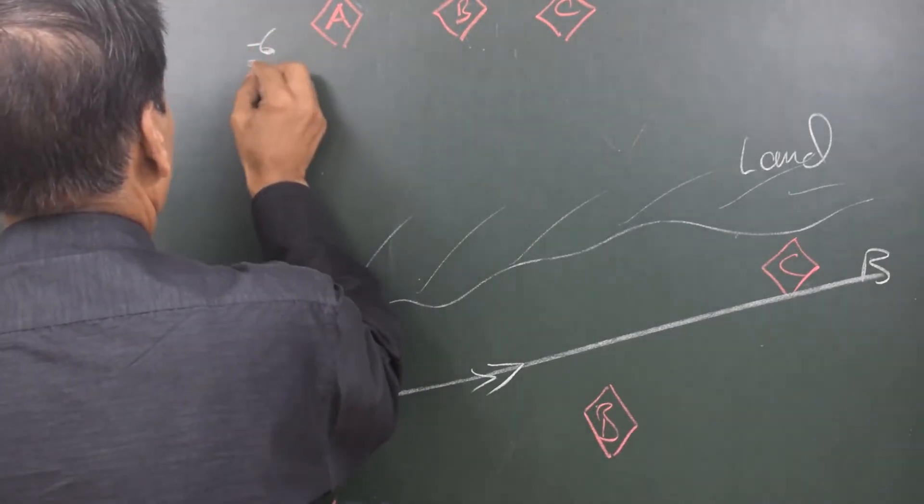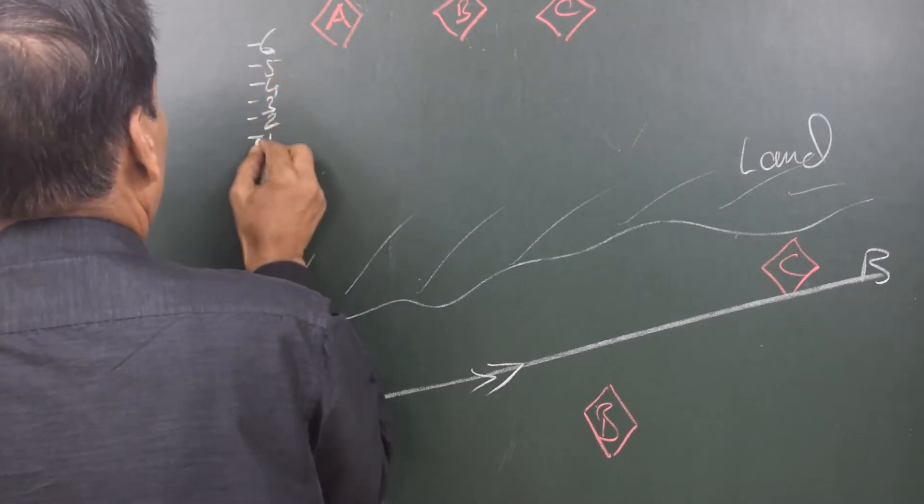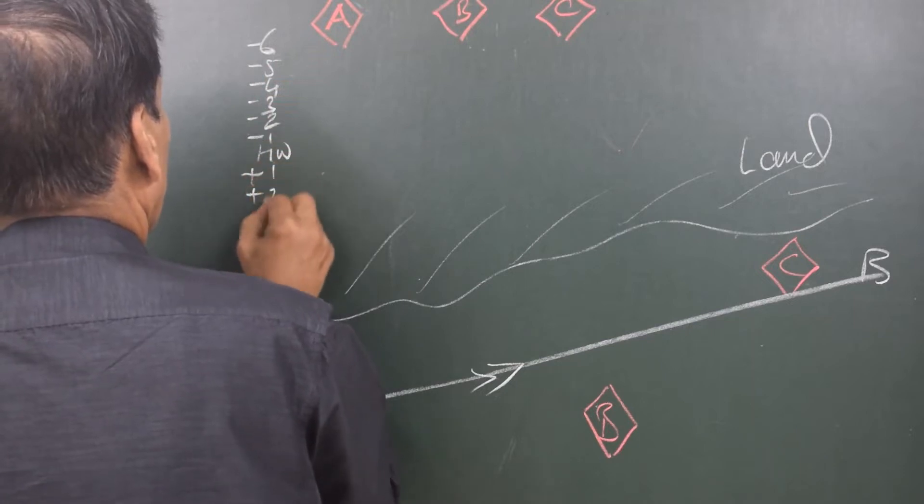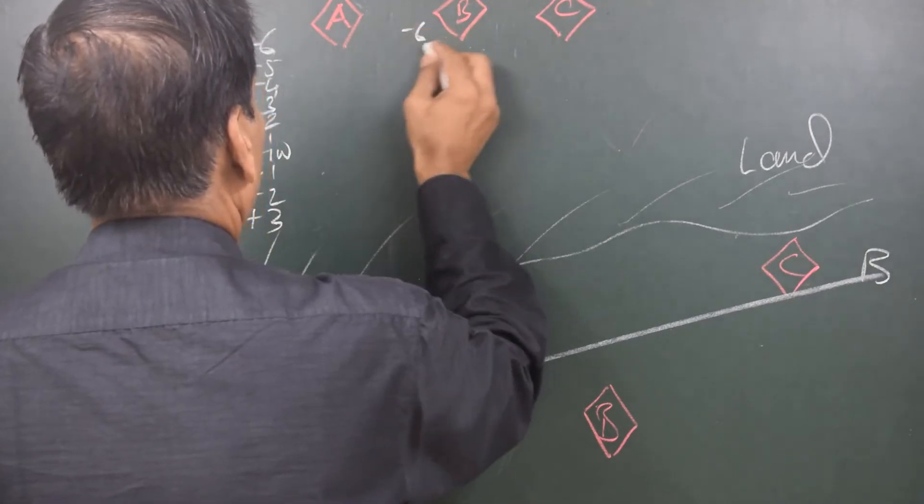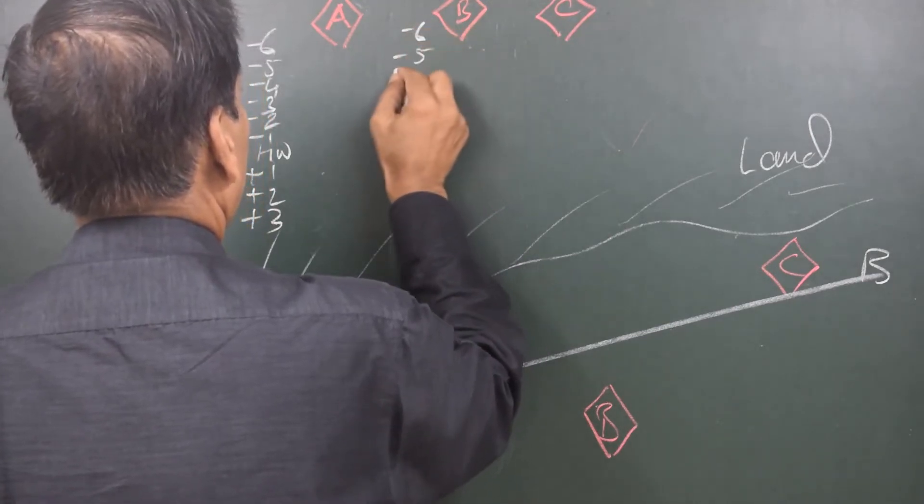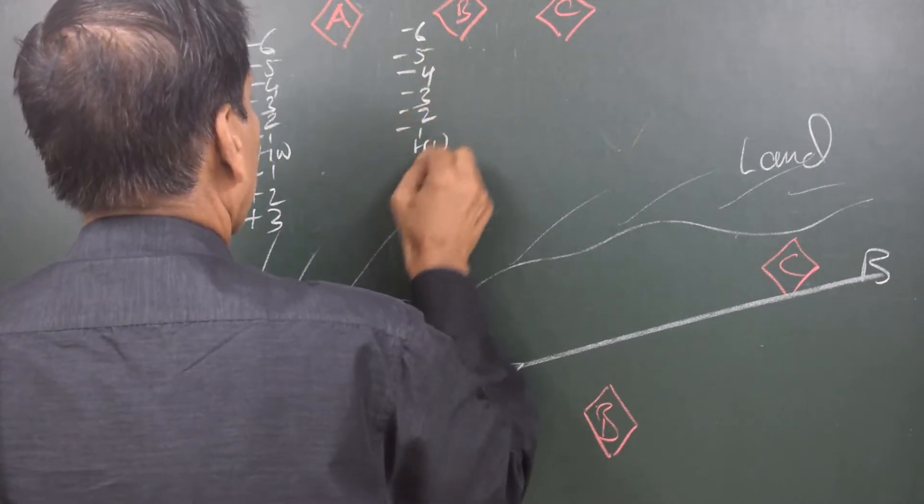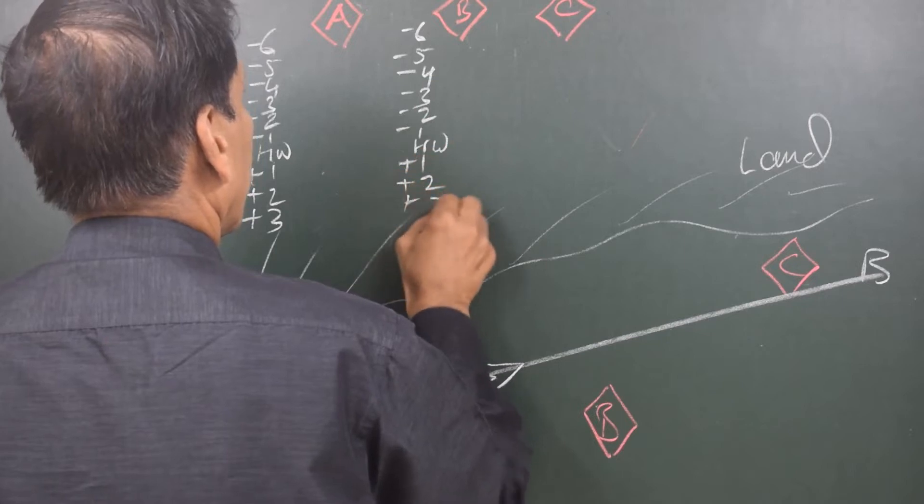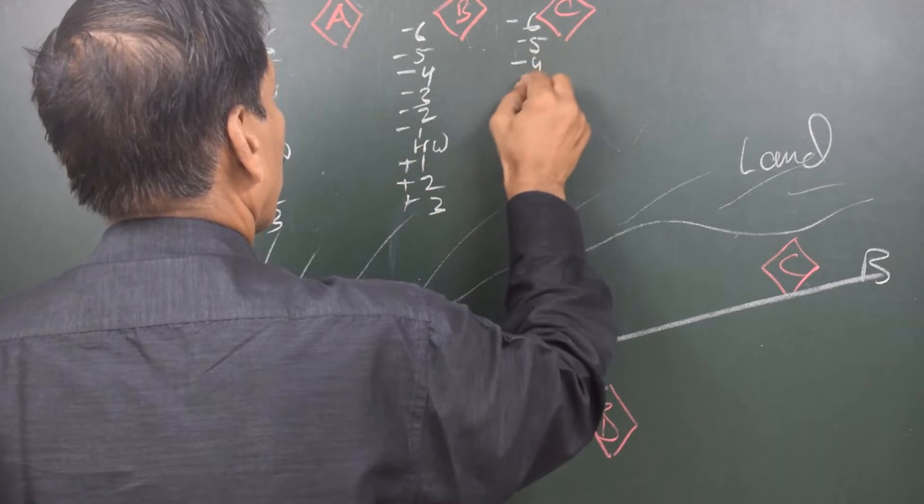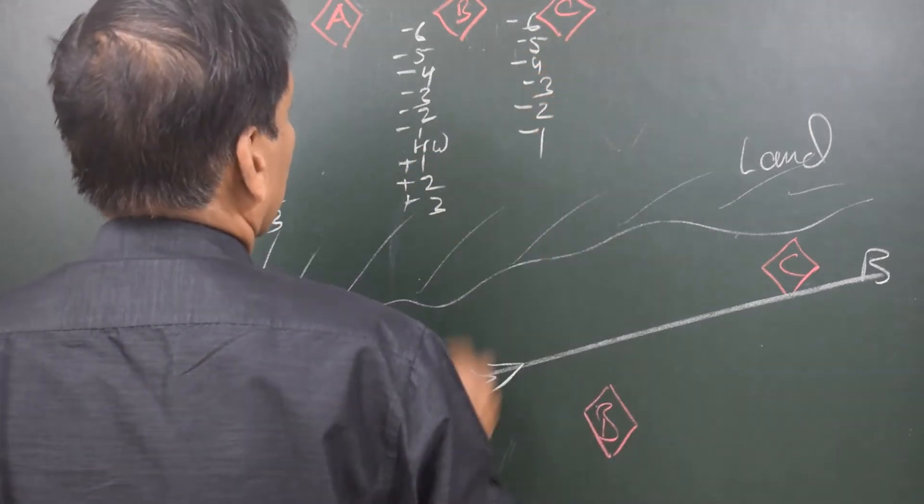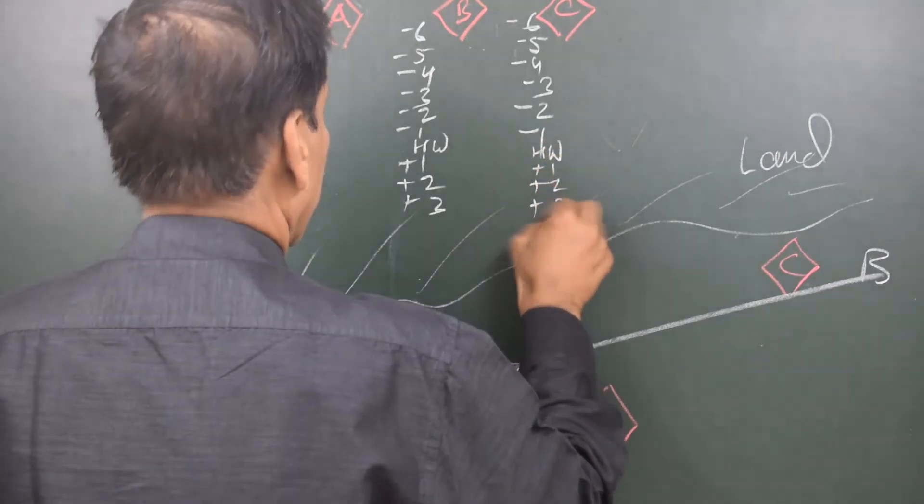The chart shows minus six hours, minus five hours, minus four, minus three, minus two, minus one, high water, plus one, plus two, plus three, and so on. Same way you have for B: minus six, minus five, minus four, minus three, minus two, minus one, high water, plus one, plus two, plus three.